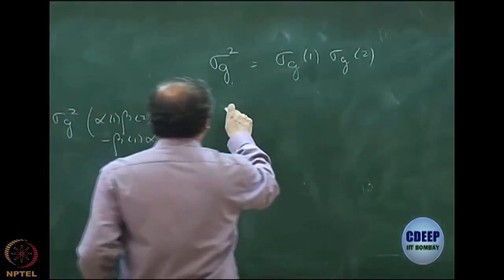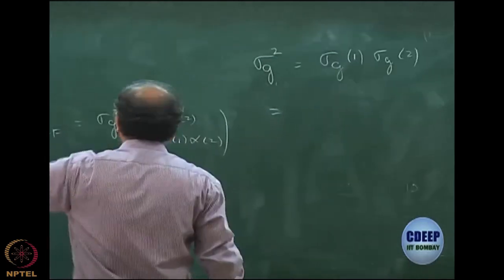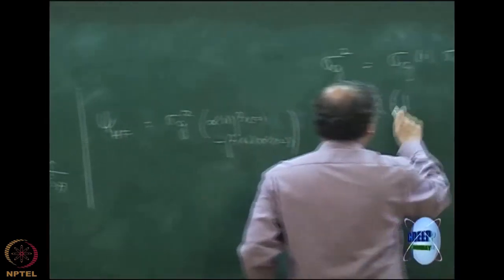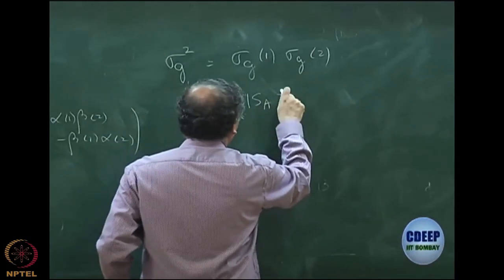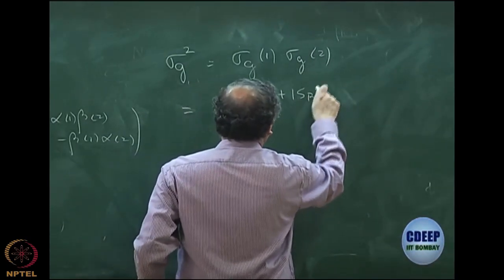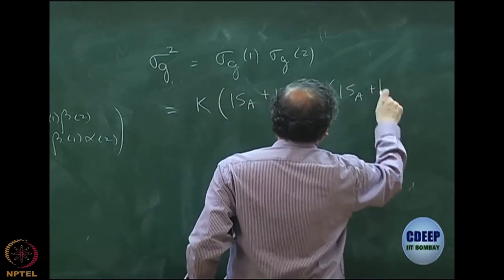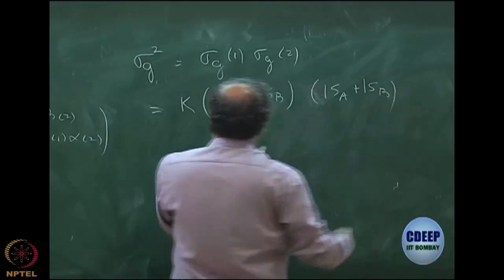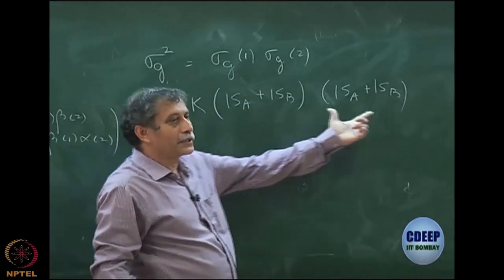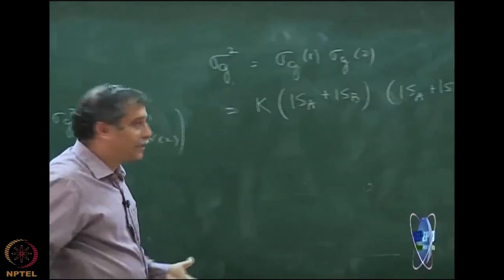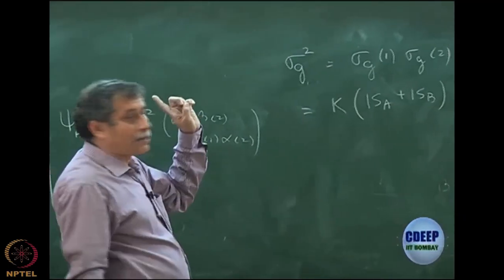Let me expand sigma_g. Sigma_g is, barring the constant, basically some constant times 1s_a plus 1s_b. And again 1s_a plus 1s_b. When I am writing this, please note, this is for coordinate 1, this is for coordinate 2. But both of them are same. These are now written in terms of atomic orbitals.